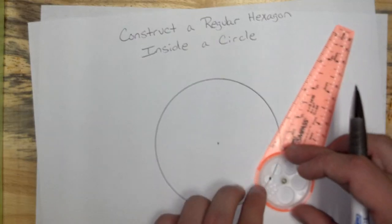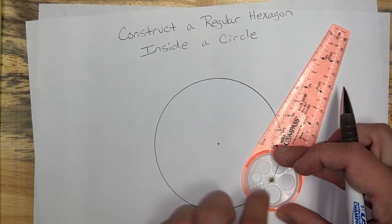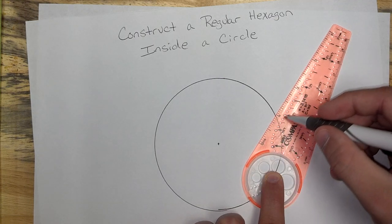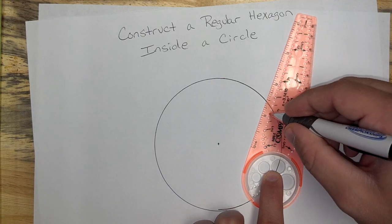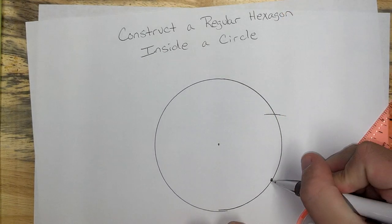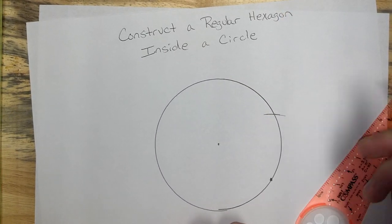go ahead and come out here, put that brass ring of our compass right there, and use that same setting and make a little mark out on your circle. So here we've got our starting point and our arc.